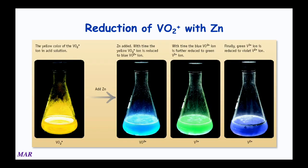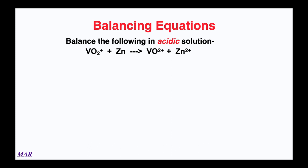The next example uses the vanadium complex VO₂⁺. Vanadium is named after the Swedish goddess of beauty because it makes a whole range of awesome colors — yellow, blue, green, purple. We want to balance the reaction VO₂⁺¹ + Zn → VO₂⁺ + Zn²⁺ in acidic solution. These species look a little unusual, and we're introducing the idea that the solution is acidic, which will be important.